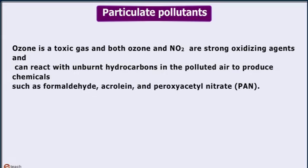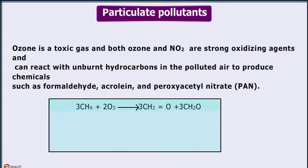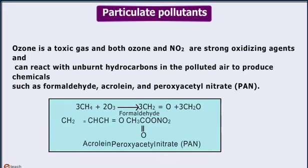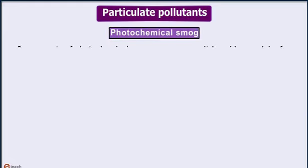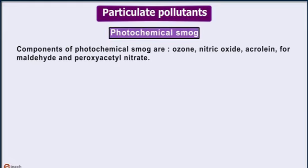They produce chemicals such as acrolein and peroxyacetyl nitrate (PAN). The reaction is: 3CH4 + 2O3 → 3CH2=O + 3H2O. The structures of acrolein and PAN are as shown. The components of photochemical smog are ozone, nitric oxide, and peroxyacetyl nitrate (PAN).